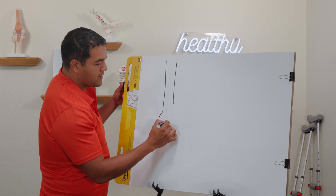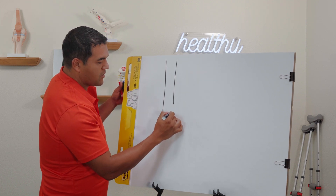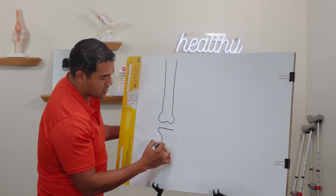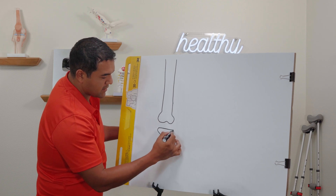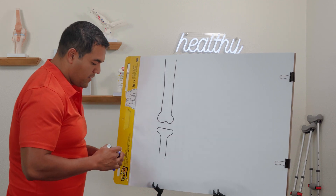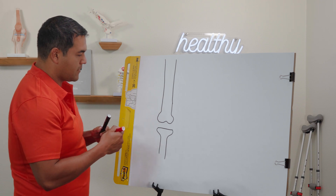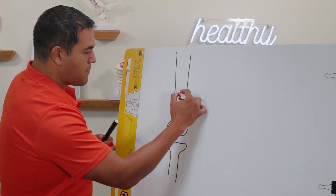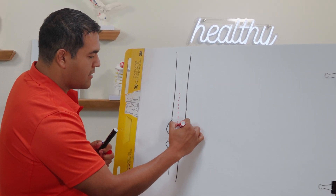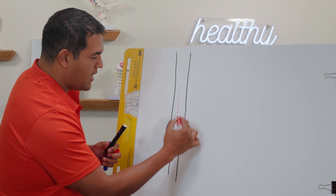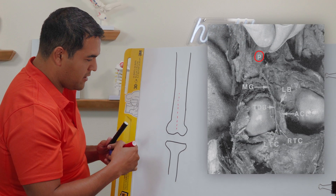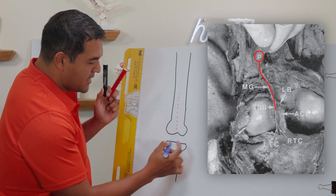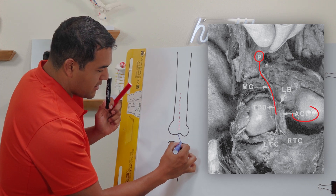That's the thigh bone and it is shaped more or less like that. Then you have the shin bone that's shaped more or less like that. On the back side — if you look from the front, you'll have to pretend this is on the back, which is why I'm drawing in a dashed line. This is called the popliteal artery; it comes down the back of the leg. The ACL is right there.